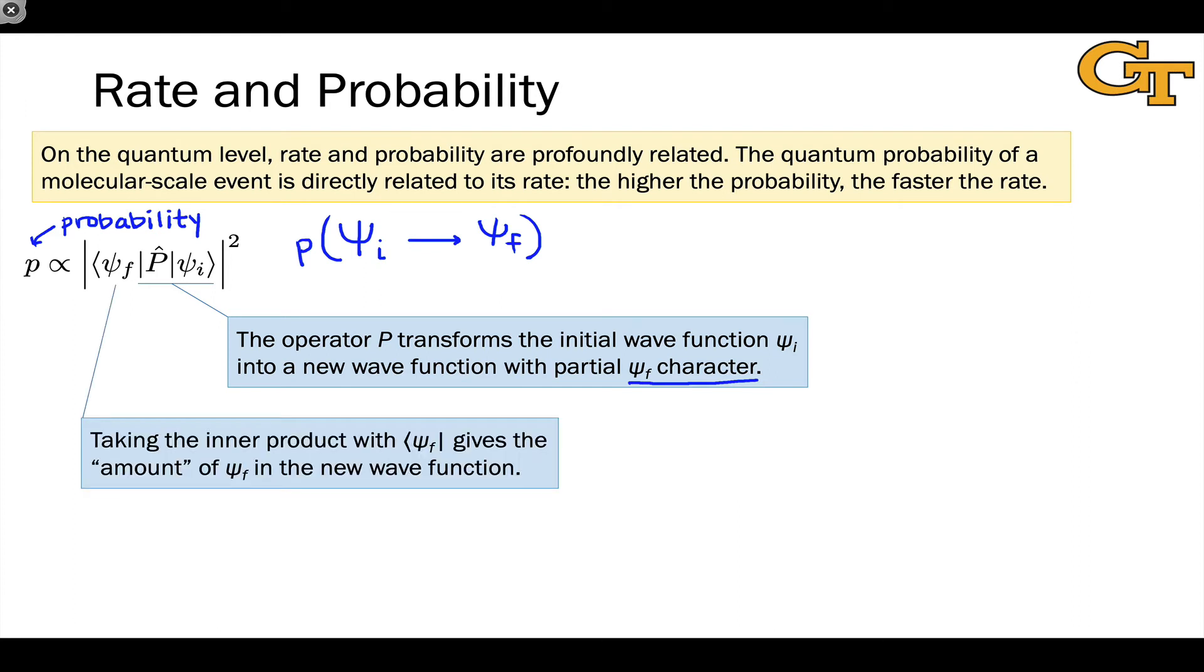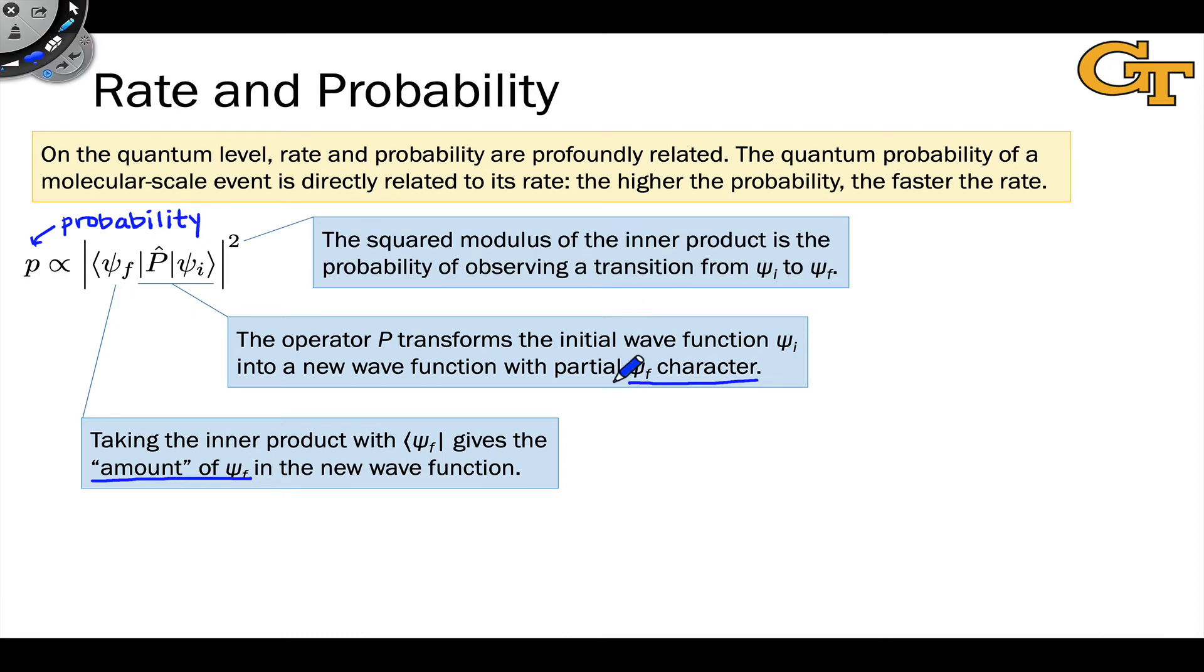By taking what's called the inner product of P ψ_i with ψ_f, we get the amount or the extent of ψ_f character that is built into P ψ_i. Squaring the ψ_f character in P ψ_i gives us a measure of the probability of observing a transition from ψ_i to ψ_f.